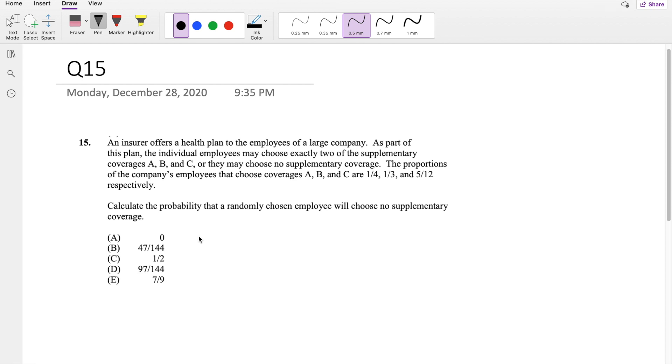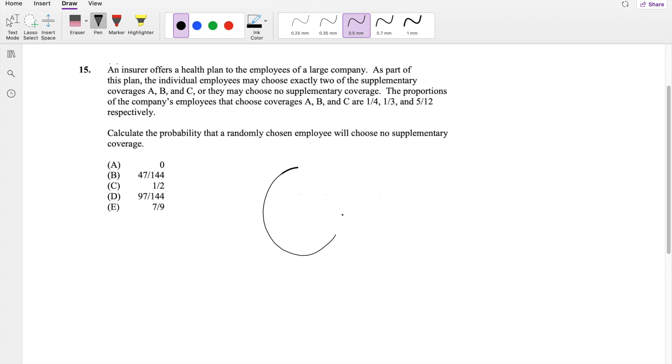Okay, assuming you already attempted it, let's just dive right in. So a random employee can actually choose two of the coverages, right? So they can choose X, Y, or Z, or they can also pick none of them, so W.